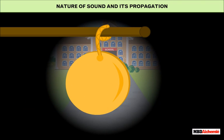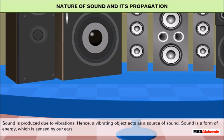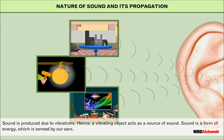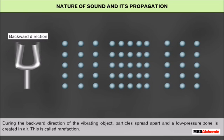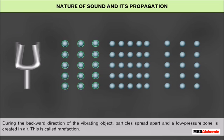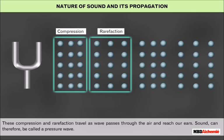Sound is produced due to vibrations. Hence, a vibrating object acts as a source of sound. Sound is a form of energy which is sensed by our ears. When an object vibrates in air, it compresses the air during forward motion. The compression increases air pressure and propagates away from the vibrating object. During the backward direction of the vibrating object, particles spread apart and a low-pressure zone is created in air. This is called rarefaction. These compressions and rarefactions travel as waves pass through the air and reach our ears.